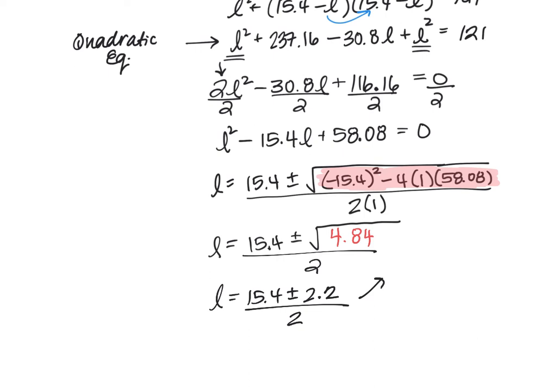Now, there isn't a fancy plus or minus button on your calculator, so we do have to actually do each of these computations separately. So the first one is going to be 15.4 plus 2.2, all divided by 2. And then we'll also have 15.4 minus 2.2, all divided by 2. So take a moment, pause, do your computations. We should end up with 8.8 and 6.6 as our two possible lengths.